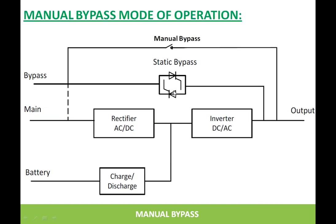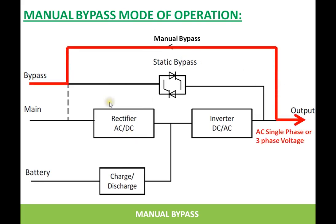The other mode is manual bypass mode, and the UPS is put into this mode whenever maintenance needs to be carried out on the UPS system. The maintenance person can perform the required maintenance without disturbing the load. During the maintenance operation, output is available through the manual bypass. It is just an MCB — when switched on, whatever mains voltage is present is fed directly through the bypass switch to the output. In this mode there is no voltage regulation; the same incoming mains voltage is fed to the output.